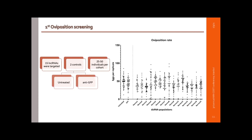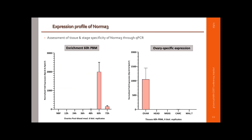We had cohorts of more or less 50 replicates, and we focused on the most promising candidate, named NORMA3, which is a gene that had a very interesting expression profile.